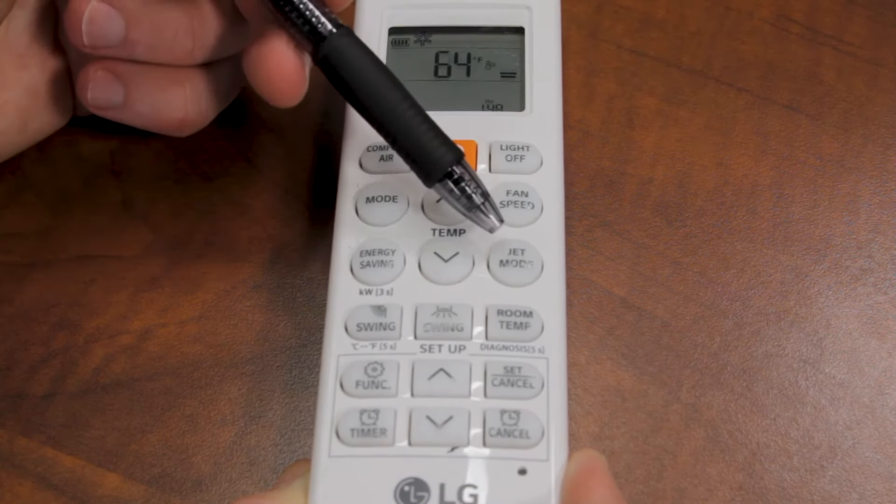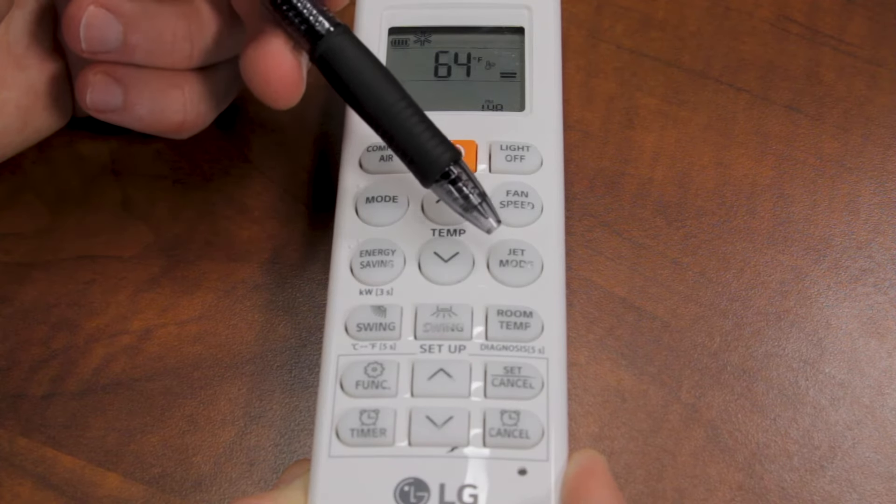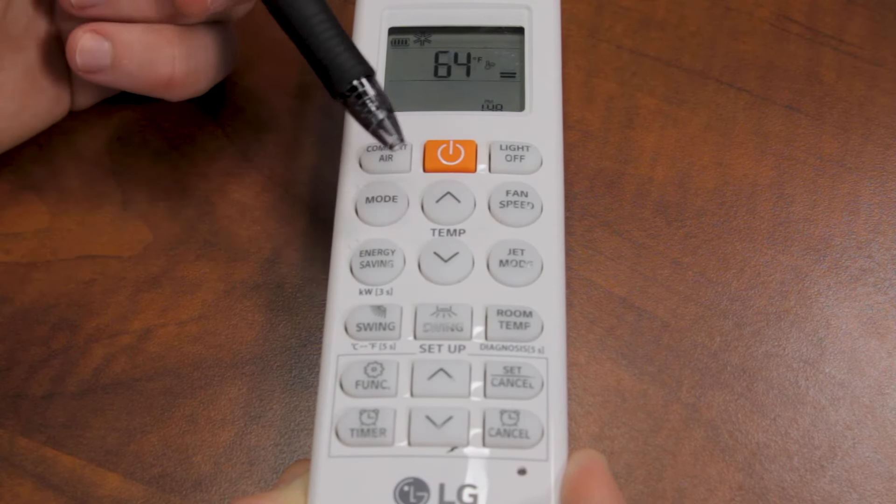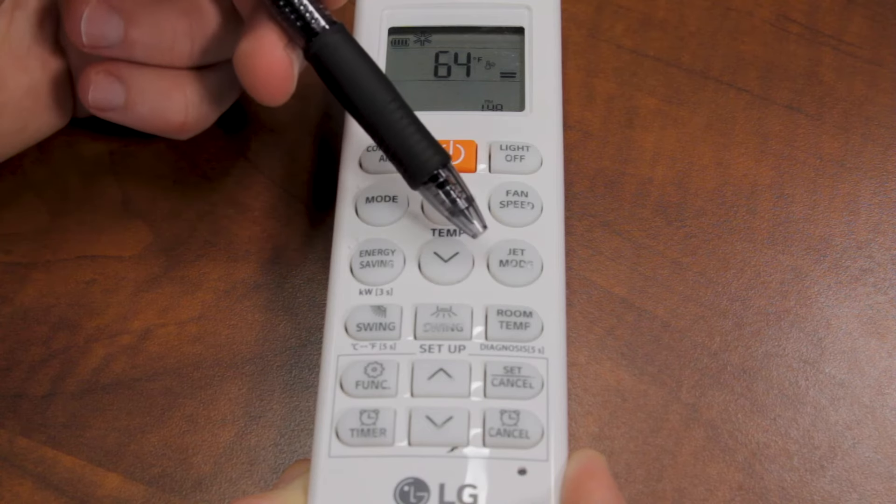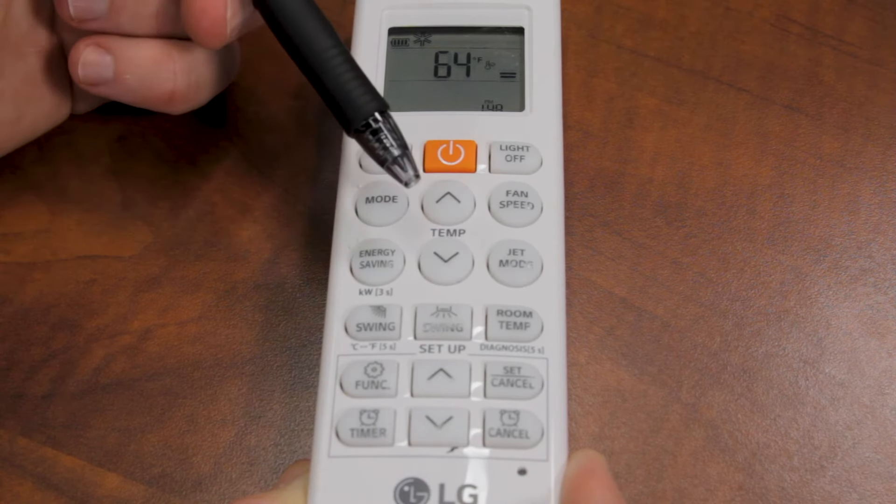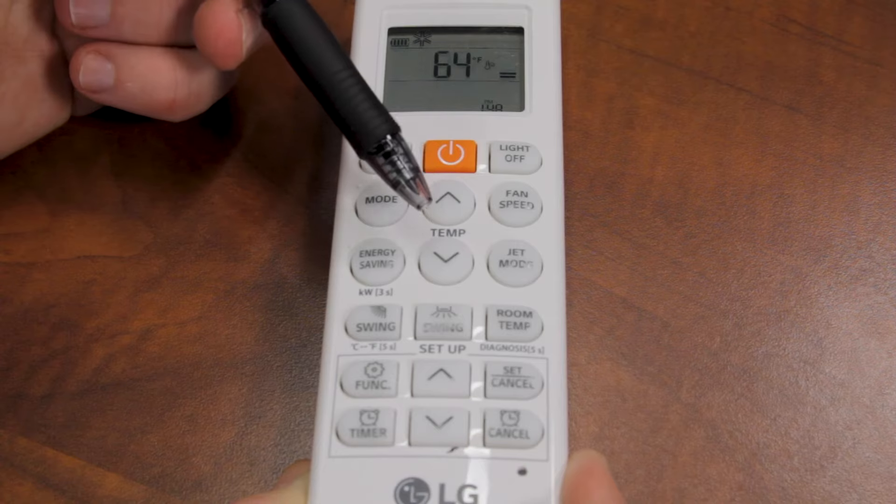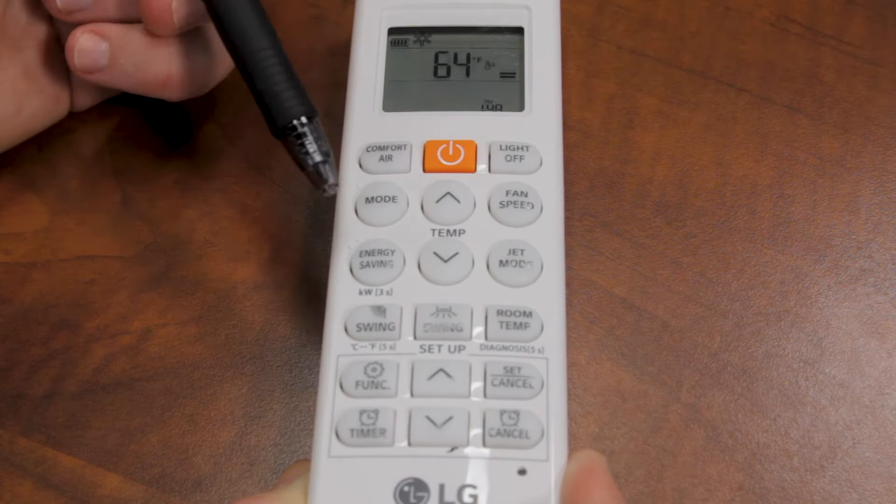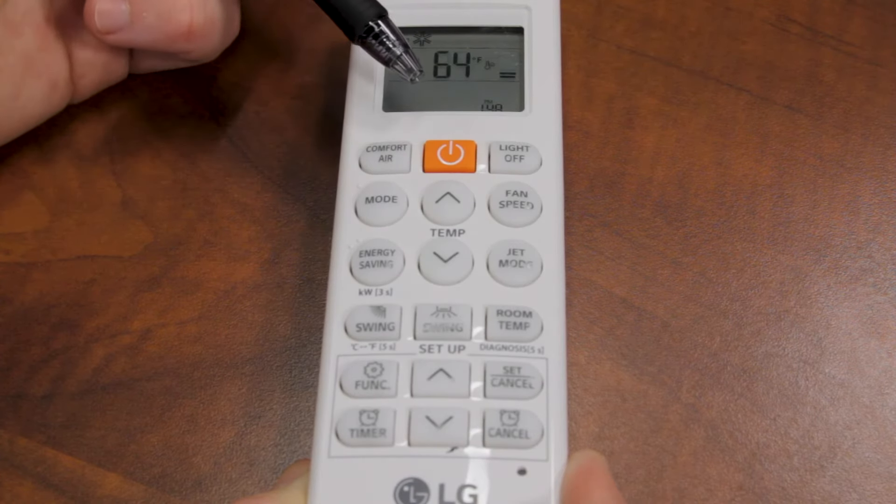So jet mode. Say you come home and it's really hot or really cold. You put this on in cooling or heating and press jet mode. It's going to ramp this unit up to max capacity for 30 minutes. After that, it's going to go back down to its normal set point.